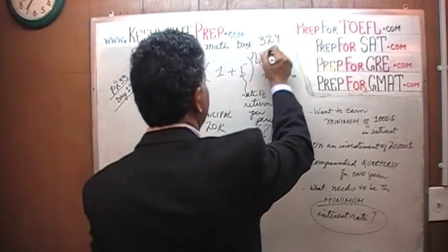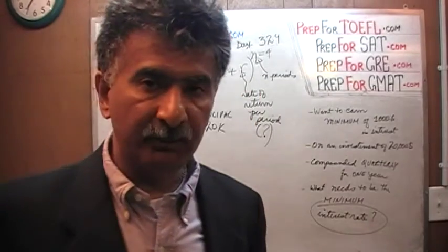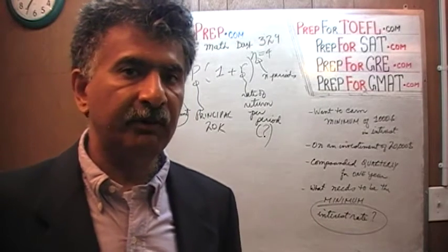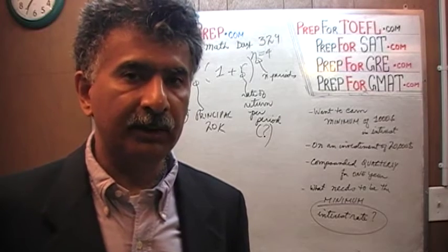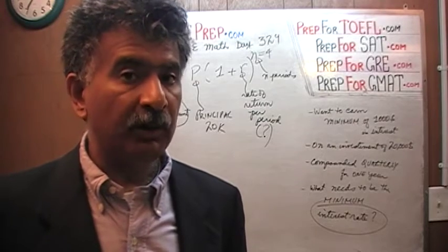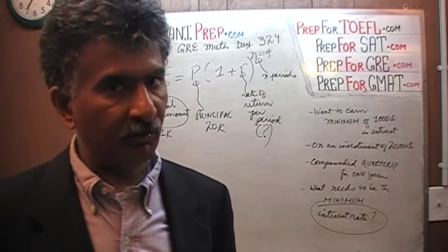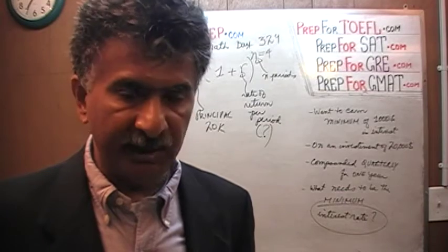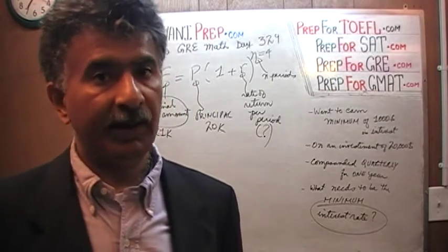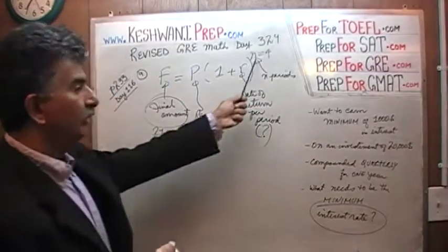N equals 4, because there are 4 quarters in a year and we are keeping the money in the account for 1 year. What I am pointing out is that we are dealing with 4 periods. Had the money been sitting there for a year and a half, compounded quarterly, we would have had 6 periods. Had we kept it for half a year, we would have had 2 quarters.